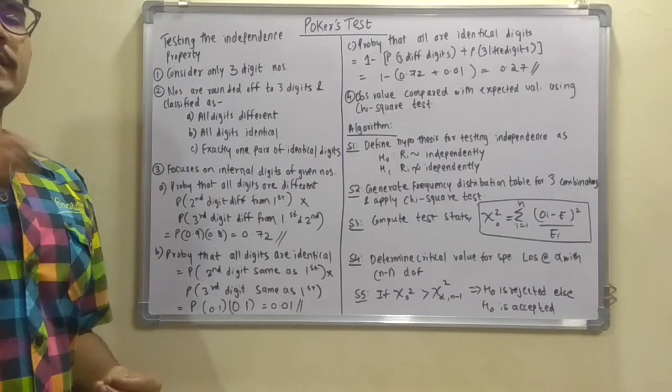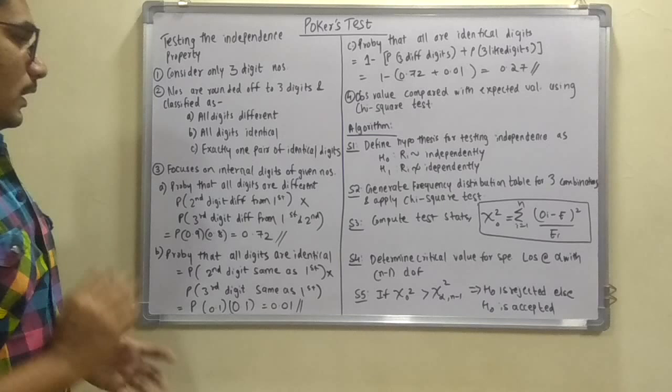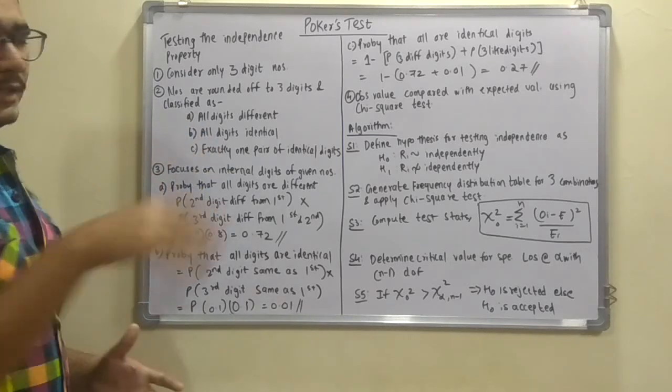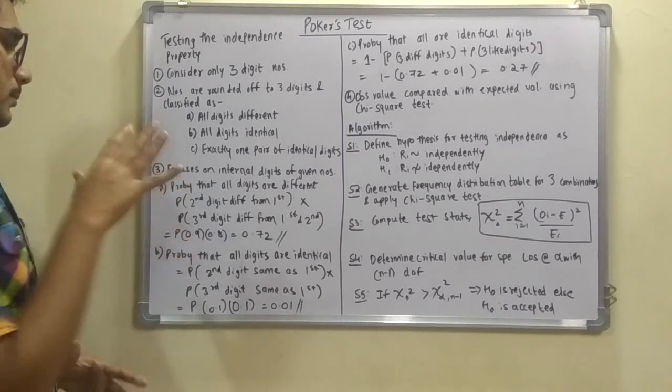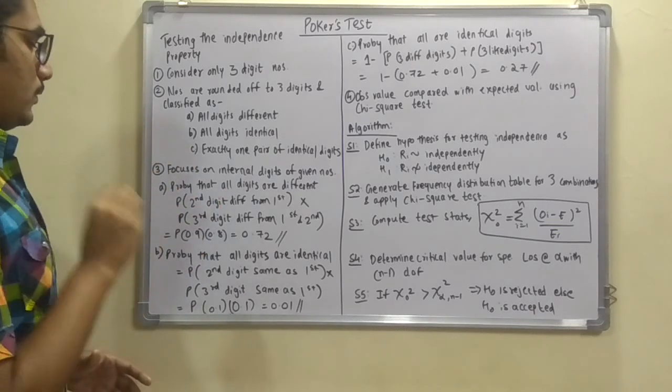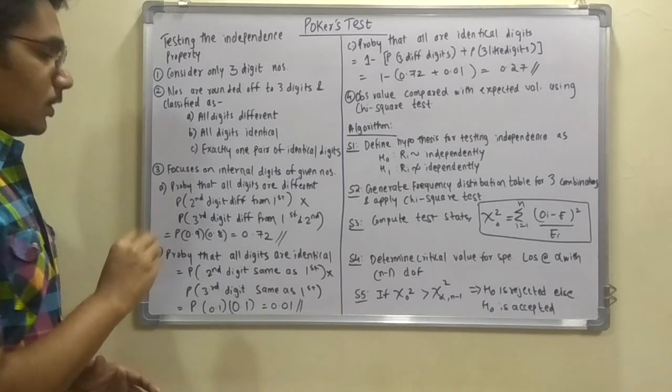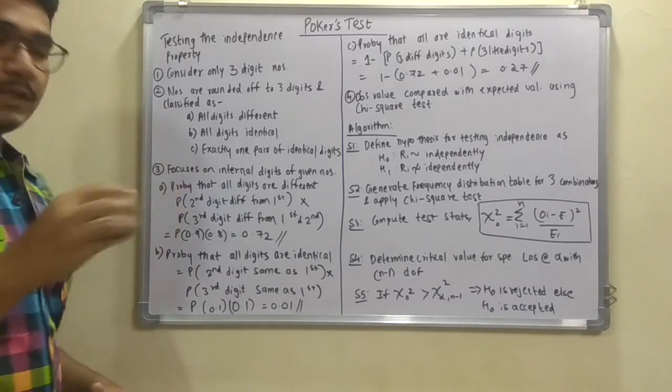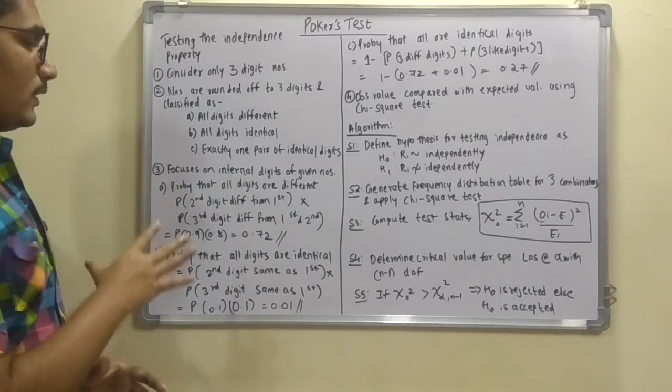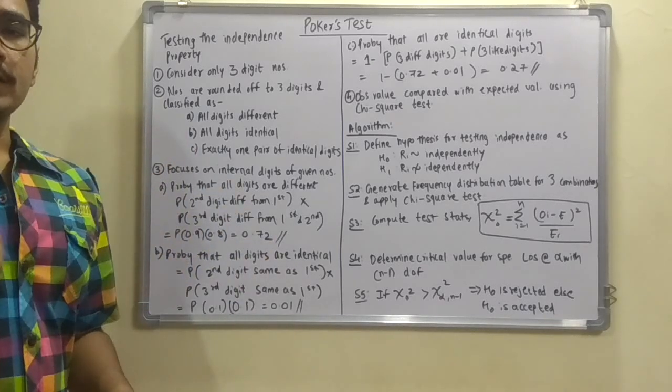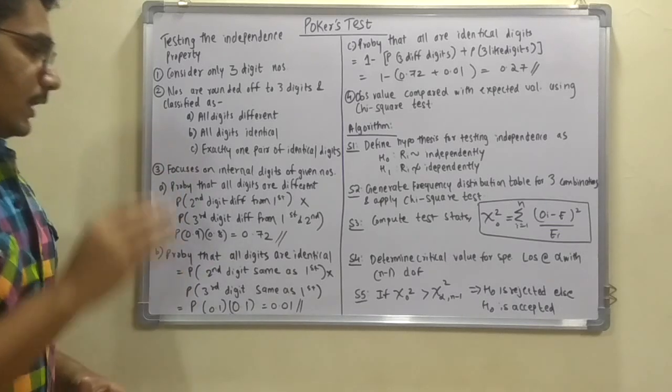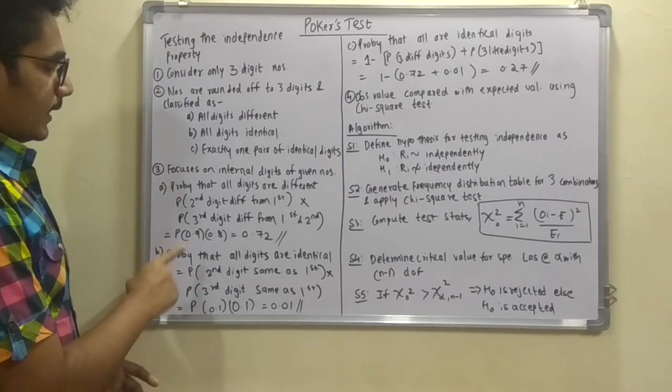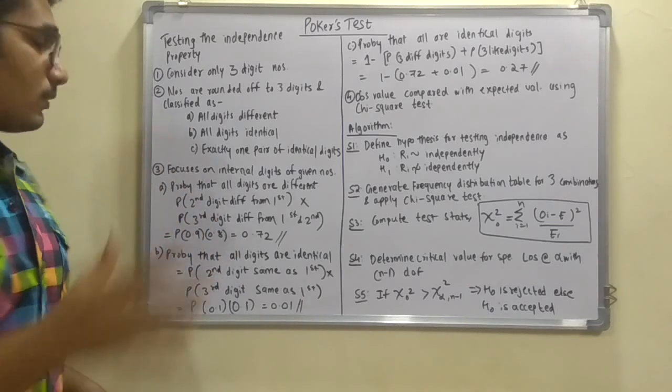So for that we will consider only the individual digits of the numbers. Now if we are going with all the digits are different, then since it is all based on probability distribution, you have to calculate the probability of second digit from the first multiplied by probability of third digit from first and second. Since the probability goes with 1, for second digit different from first the probability would be 0.9, multiplied by third digit different from the first and second, so it will be 0.8.